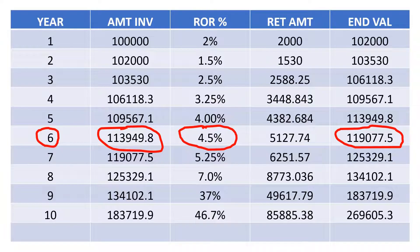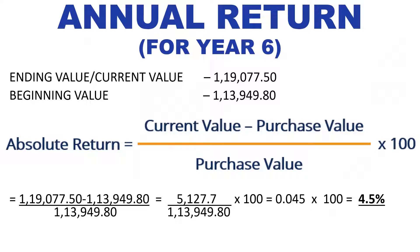Next, let us look at an example of annual return in the same set of data. The column ROR or rate of return shows the yearly rate of return for every single year. So, if I want to calculate the annual return for the 6th year, which is 4.5%, the closing value for the 6th year is Rs. 1,19,077 and the opening value is Rs. 1,13,949. Using the same formula of absolute return, the difference between the two is Rs. 5,128, which when divided by the original value of Rs. 1,13,949, gives 0.045, converted in percentage terms, gives 4.5%.